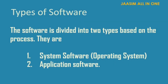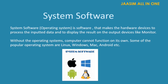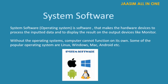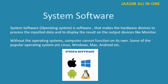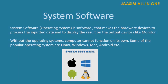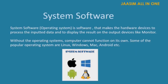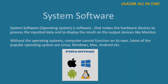System software, the operating system, makes the hardware devices process the input data and display the results on output devices like monitor, printer, and speaker. Without the operating system, the computer cannot function on its own. Examples include DOS, Linux, Unix, Windows, and Mac OS.